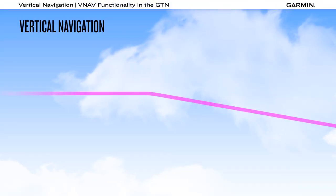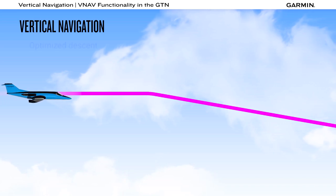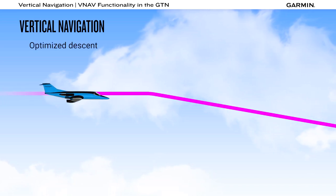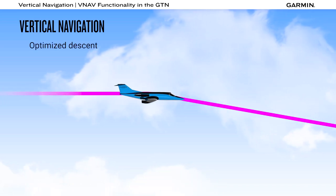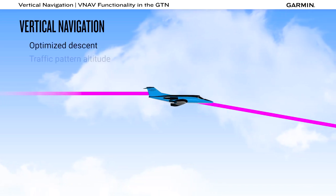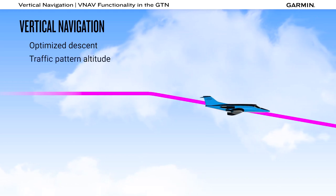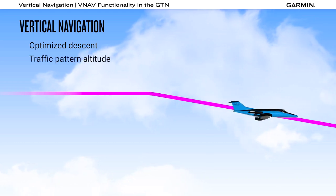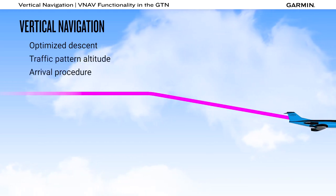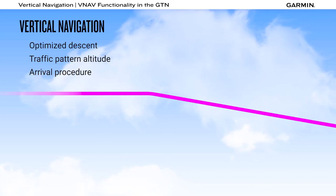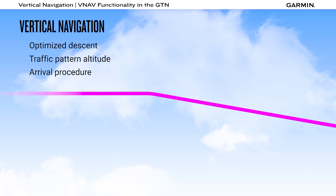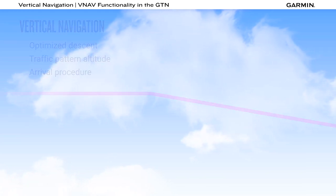Vertical Navigation, or VNAV, is a great resource that provides for optimized ascent profiles to a designated altitude, such as traffic pattern altitude, a fix designated by ATC, or to a series of altitude constraints, such as on an arrival procedure. This video covers the enhanced descent VNAV functionality found in the GTN family of navigators.